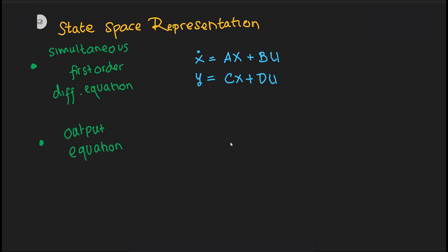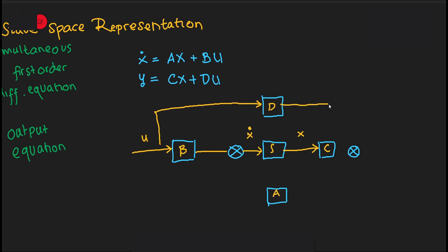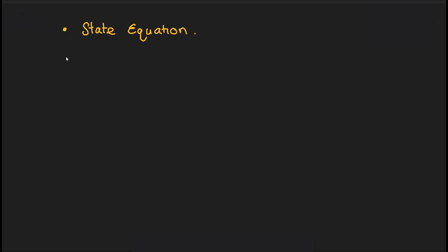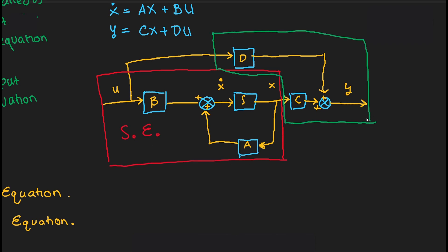These state space equations can both be represented as a state space block diagram, as taught before in signals and systems. What you see before you is the representation of a state space model in the form of a block diagram. The state space representation is divided into two equations: the state equation and the output equation. The state equation contains the differential equations and explains how the system changes with respect to time, while the output equation is used to find particular values in the system from known variables in the state equation.